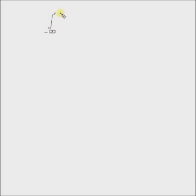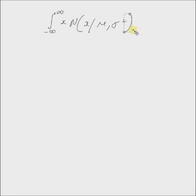Hello, welcome. In this short video we will derive the mathematical relation between the density of a Gaussian distribution and the mean of a Gaussian distribution. The relationship is written mathematically as the integral from minus infinity to plus infinity of x multiplied by the normal distribution N(x | μ, σ²) dx, which equals the first parameter μ. So the goal is to show that this integral equals μ.